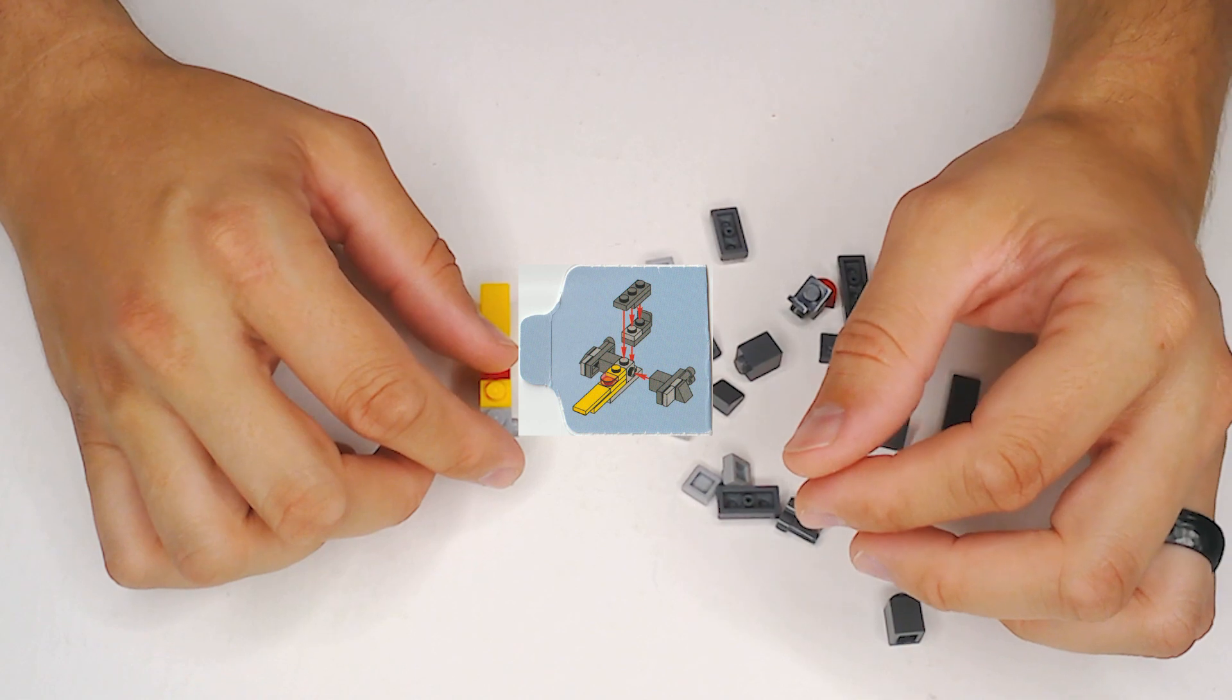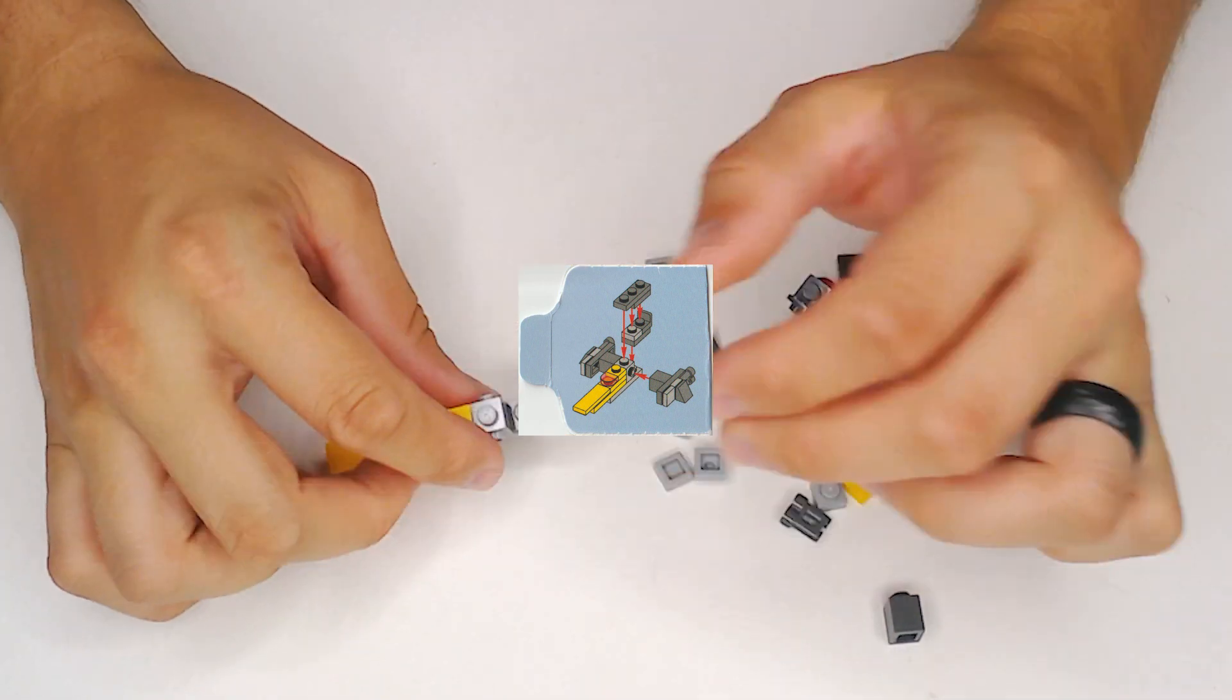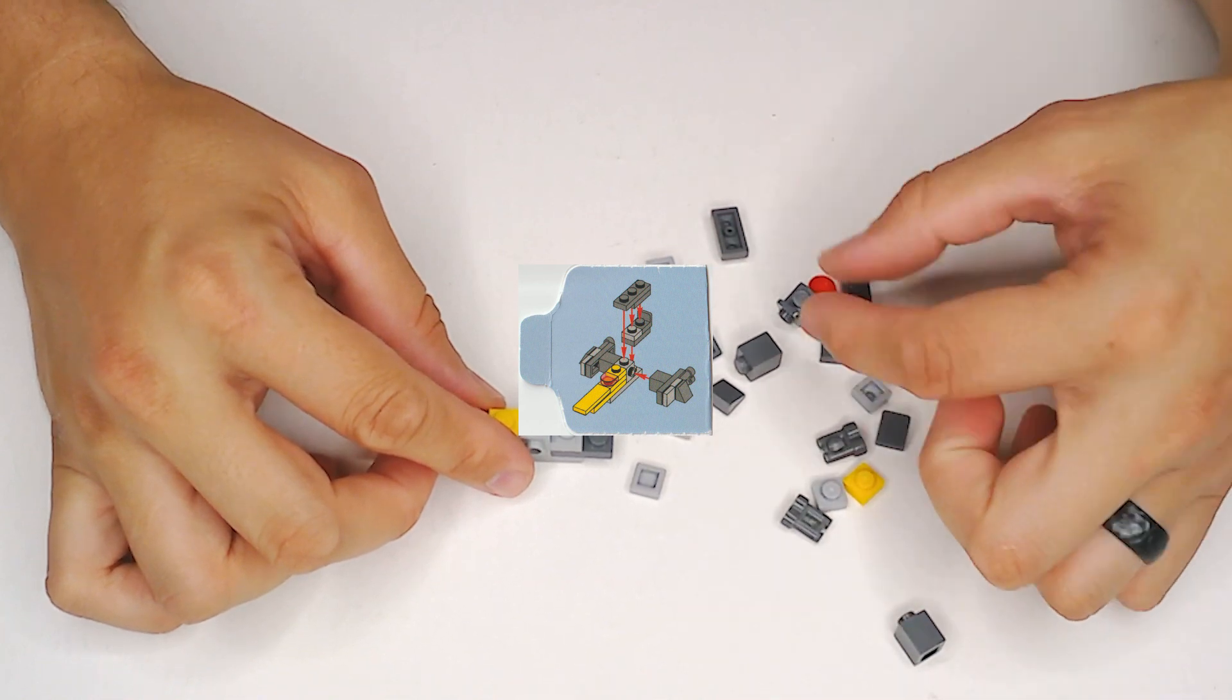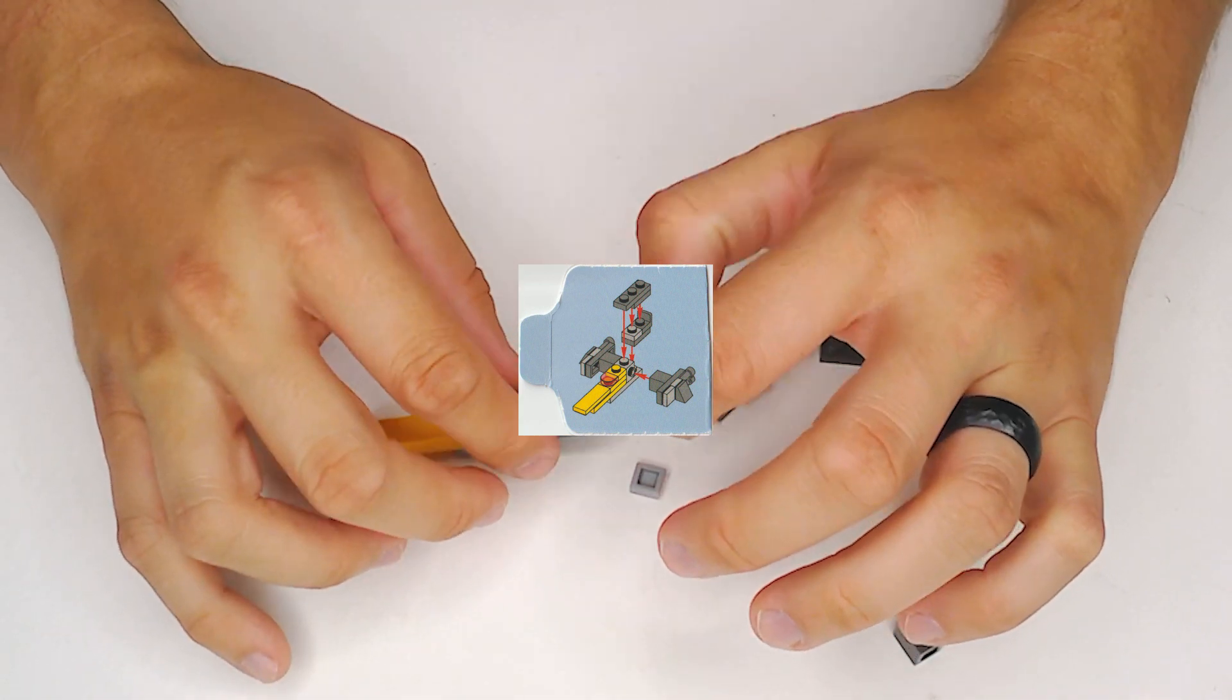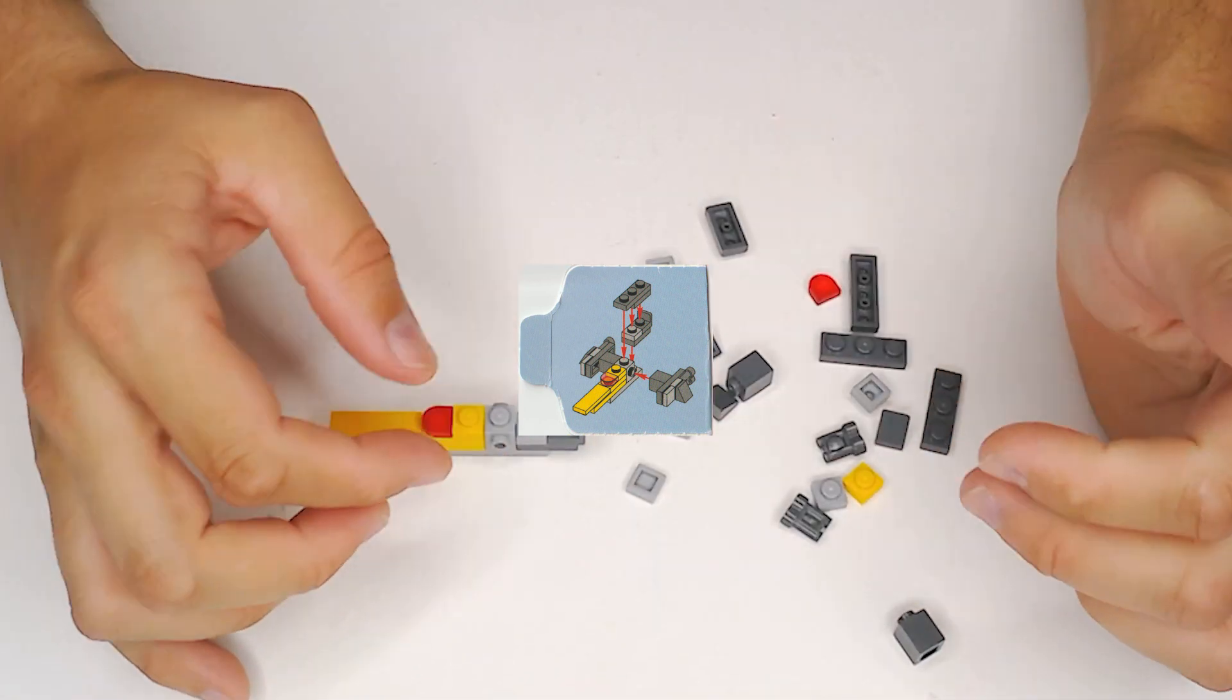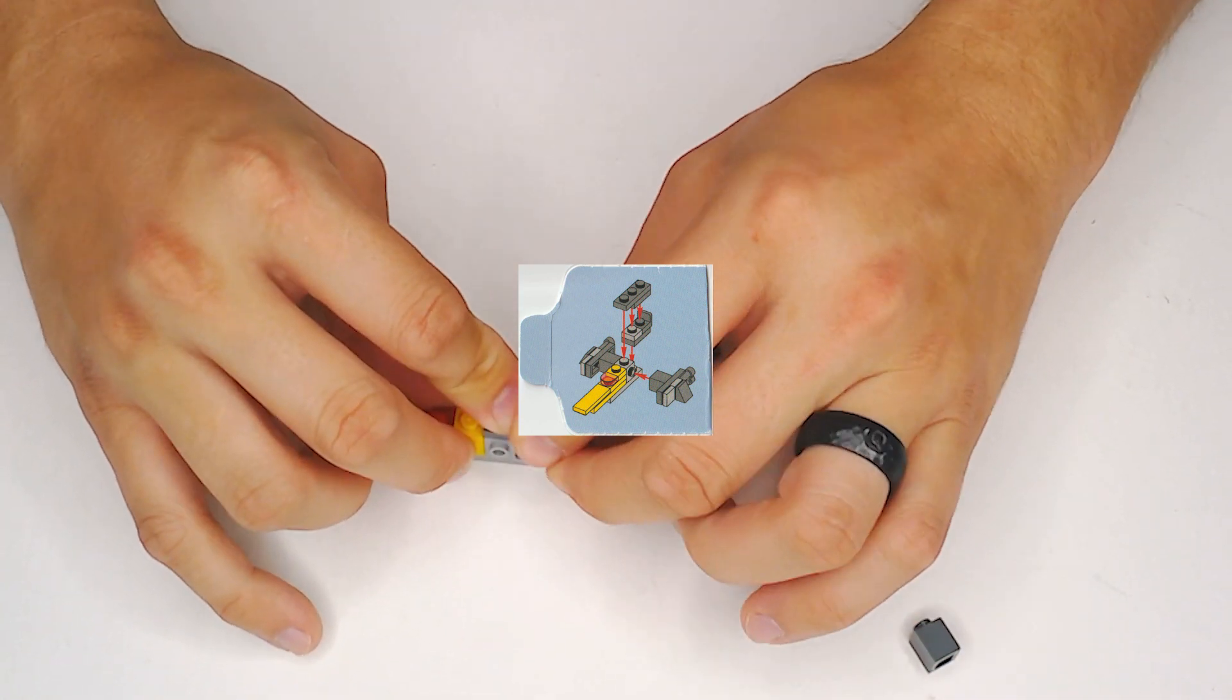And then let's see here, we're going to put some of these black gray one by two plates, and then we're going to put these light grays on the sides. On the inside, and then dark gray one by one plate, side facing one by two, and then on top of that we're going to do like three plates right there.